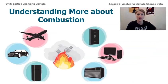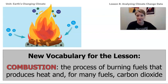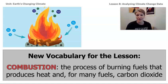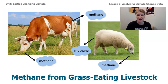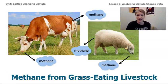In the last lesson, we learned a little bit about combustion. We discovered that the definition for combustion is the process of burning fuels that produces heat, and for many fuels, carbon dioxide. The other thing that we discovered in lesson seven is that cows and sheep are just eating grass all day long and producing methane, which is a gas that can cause energy to not be able to leave the Earth's atmosphere — it's redirected back to Earth.